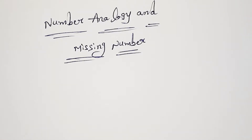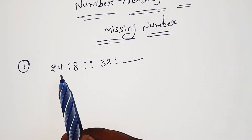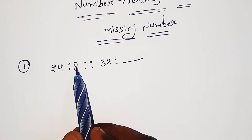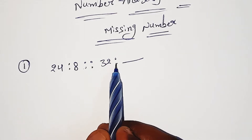Hello friends, welcome to MassLogic channel. Number analogy problems — I will show you some examples. First problem: 24 colon 8, proposition 32 colon question mark.